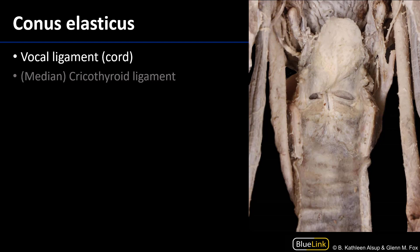Moving inferiorly along the larynx, we come to the conus elasticus, which is also known by a variety of names — it is synonymous with the cricovocal membrane or the cricothyroid membrane. There are three distinct parts to it, only two of which we'll see in the laboratory. The first and most superior part of the conus elasticus are the vocal ligaments, which when invested by mucosa are known as the vocal folds. Those vocal ligaments are the superior-most part of the conus elasticus.